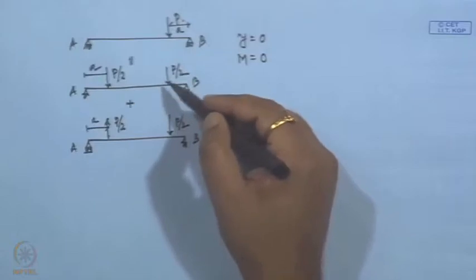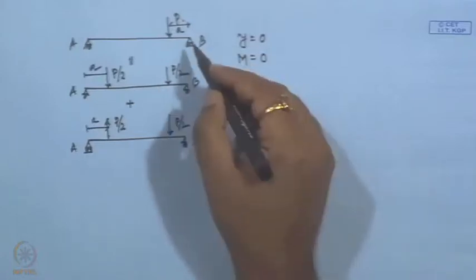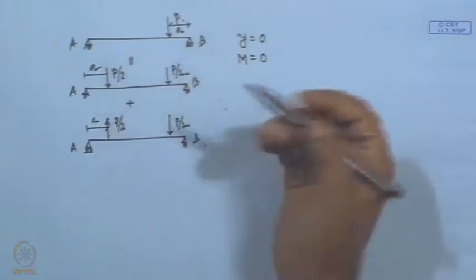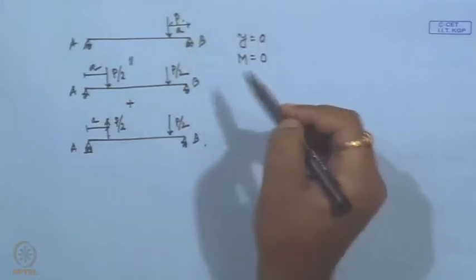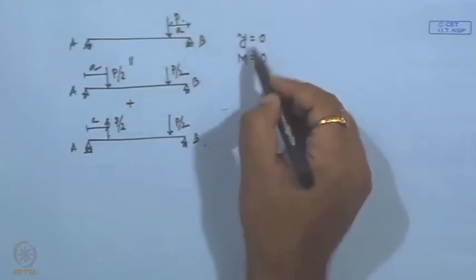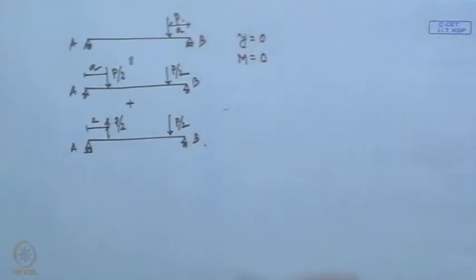From the symmetric condition we get the moment and shear force expressions, and from the antisymmetric condition we also get moment and shear force. When we add these two, the net expression gives us the total moment and shear force. That amount of shear force and moment we have to apply at the two ends to achieve the finite beam condition.